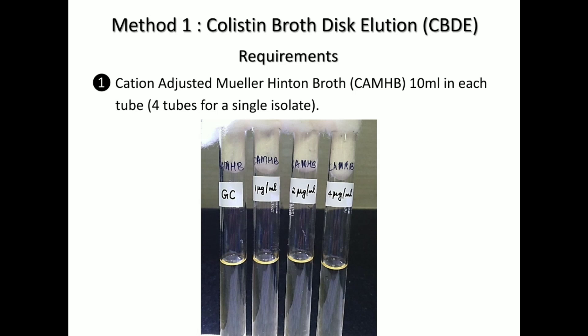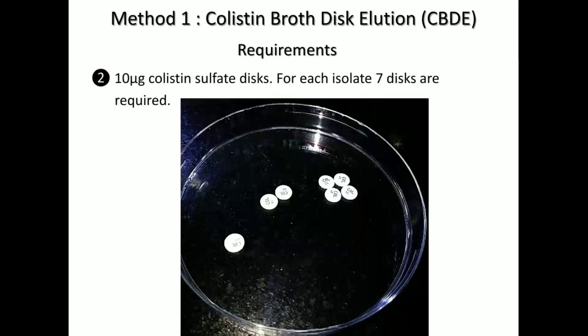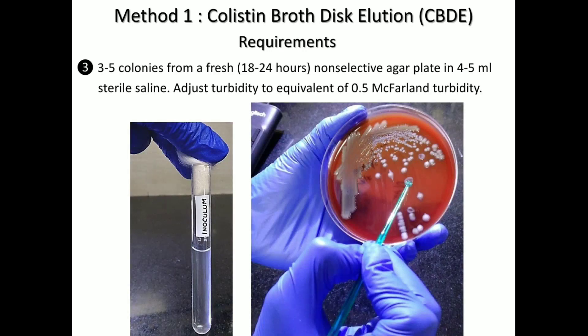The next requirement for this test is colistin discs — 10 microgram colistin sulphate discs. You need 7 discs for testing a single isolate. The third requirement is a freshly prepared colony: take 3 to 5 colonies from non-selective agar and prepare the inoculum.